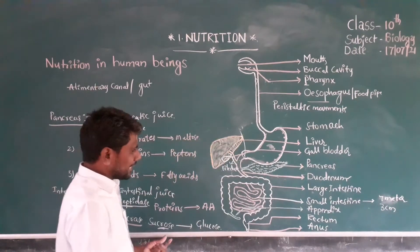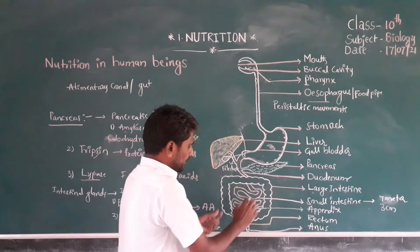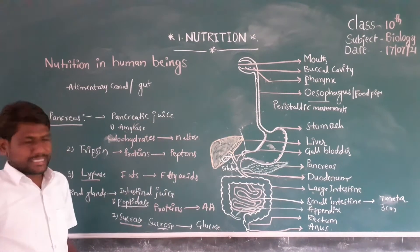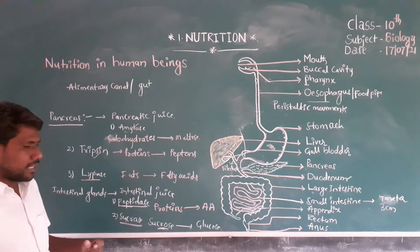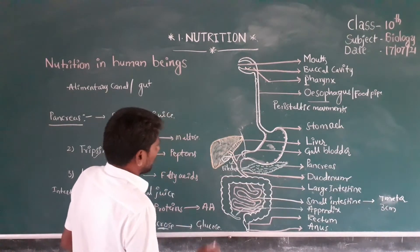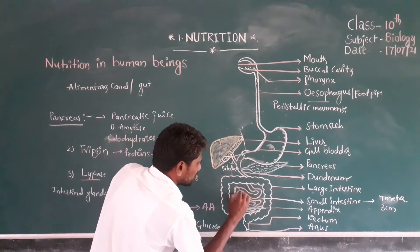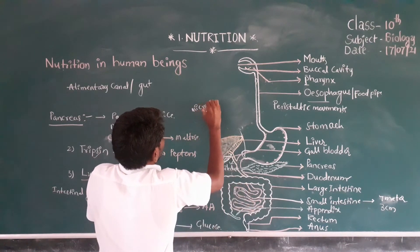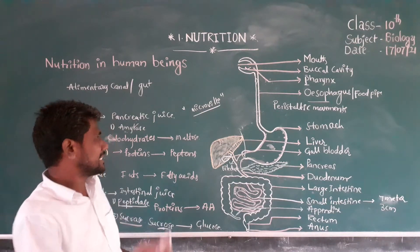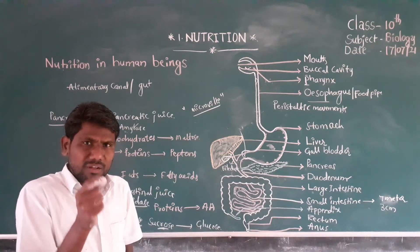The small intestine opens into the large intestine. This coil-like structure is the large intestine. After completion of digestion, the useful substances are absorbed through the finger-like projections inside the small intestine. These finger-like projections are called microvilli. The main function of microvilli is to absorb useful substances.